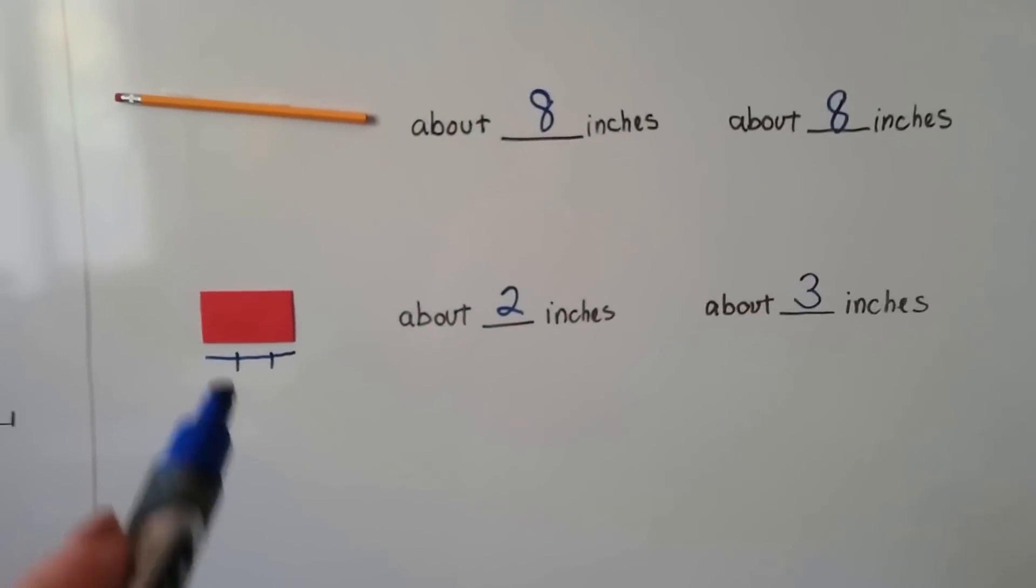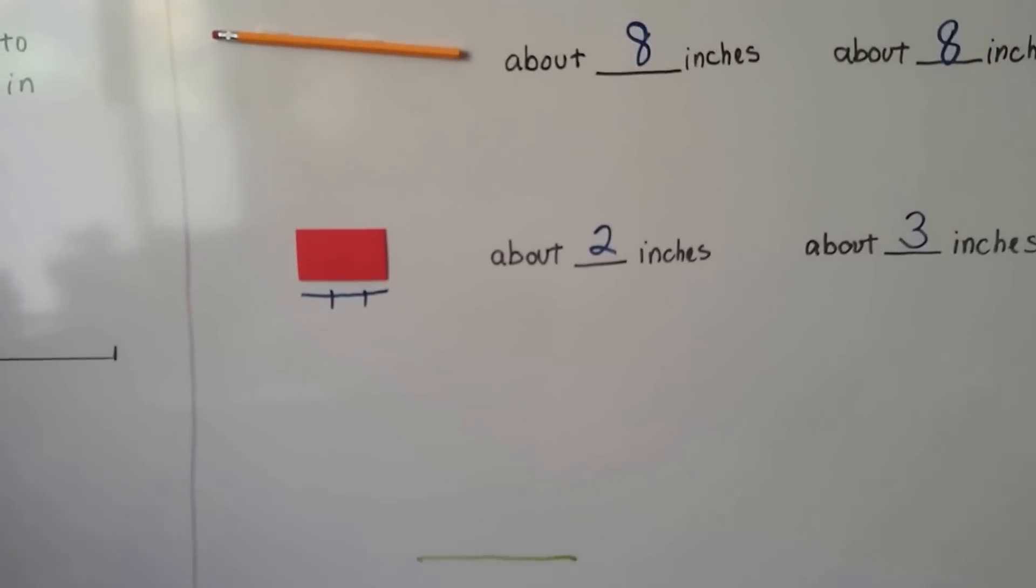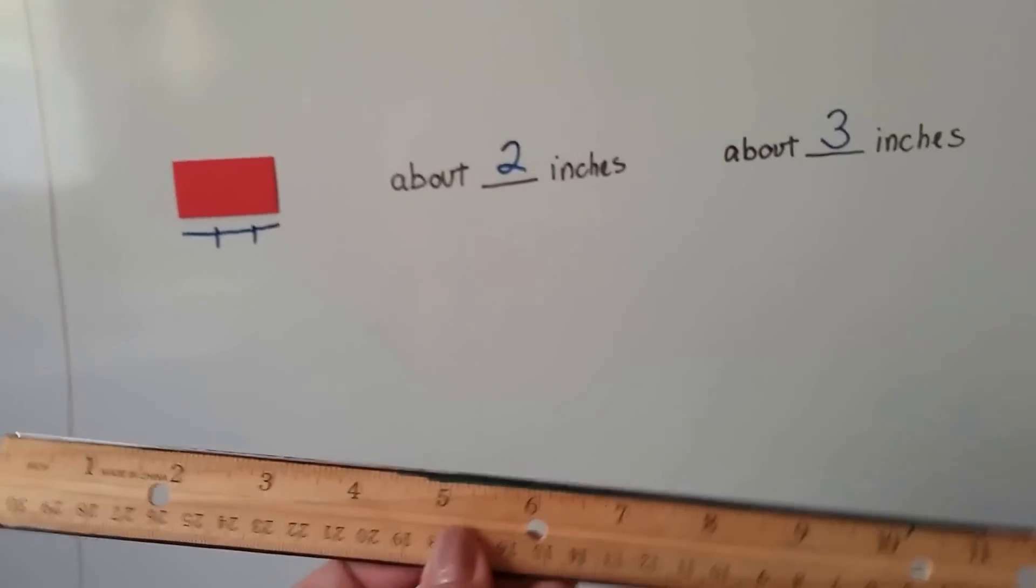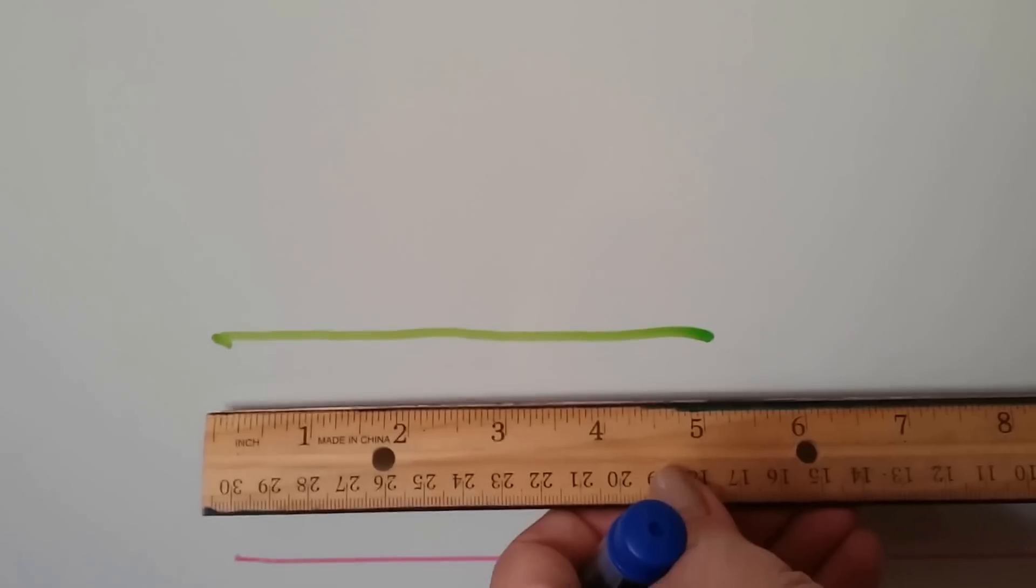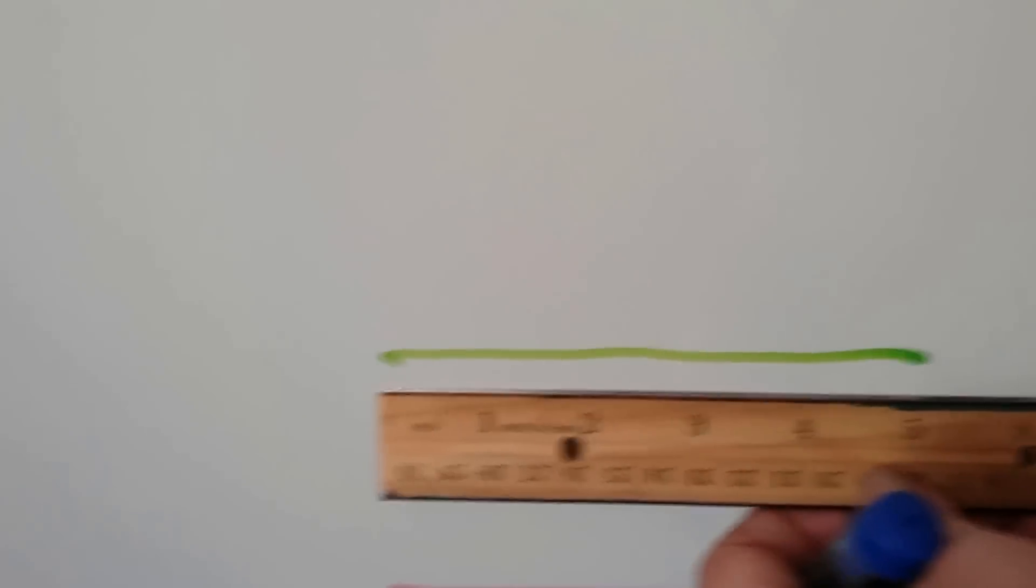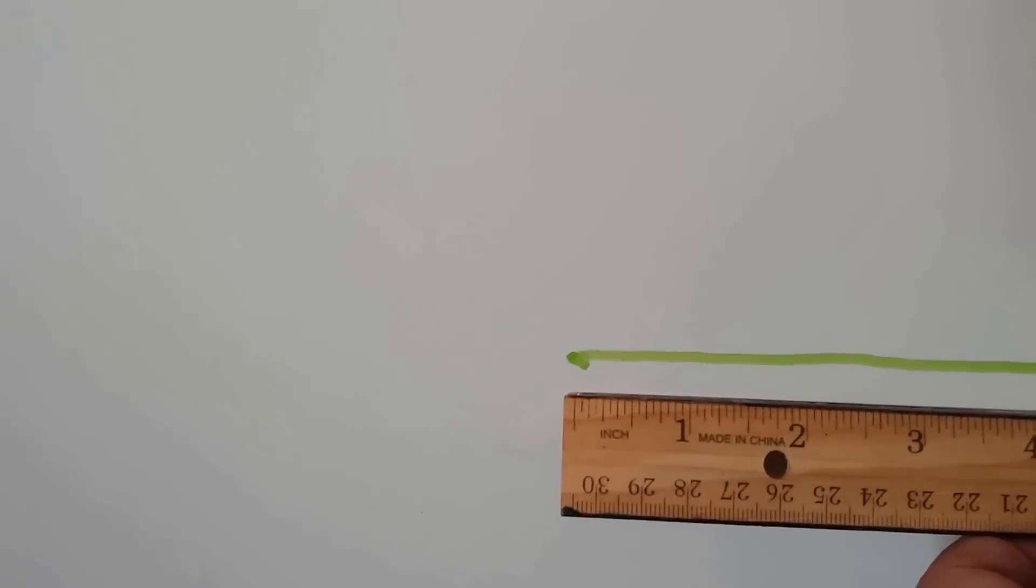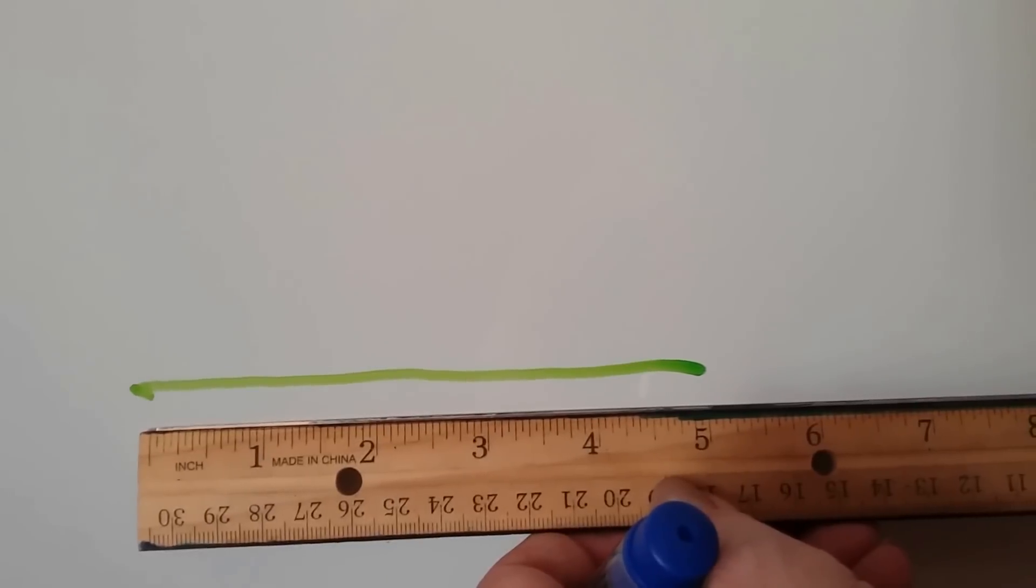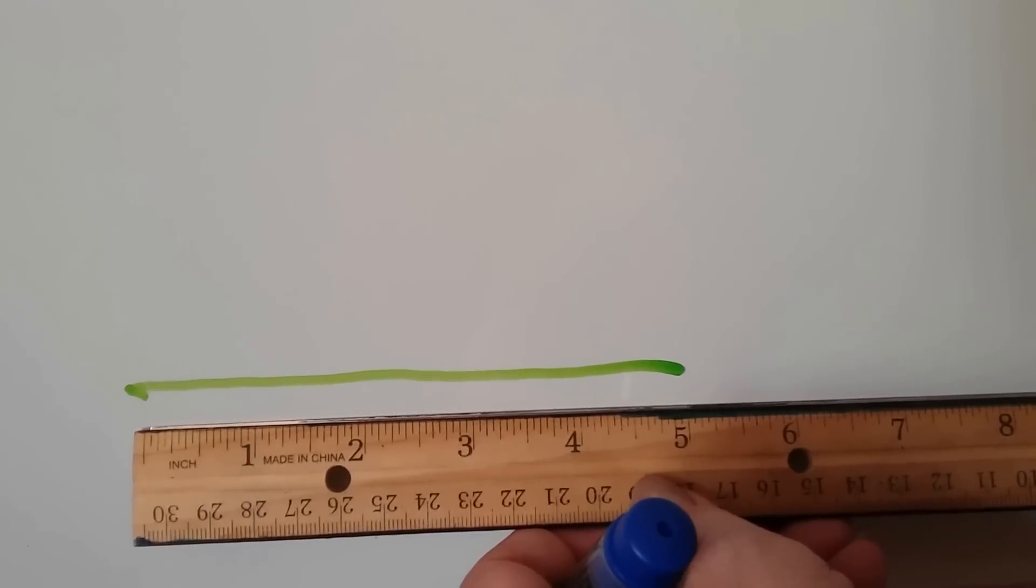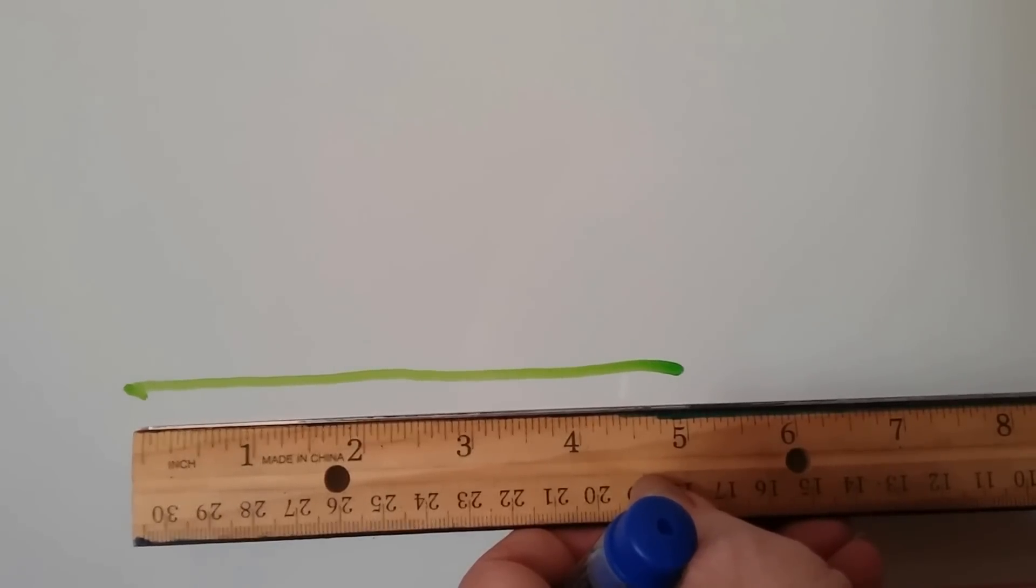Now, we can measure something with a ruler like this by just placing it next to what we're measuring. We can measure this green line. And if I put the ruler up next to it and I line it up on this side, right at the end there, and then I look at where it ends and what number it ends on. That's a 5. So, this green line is 5 inches.